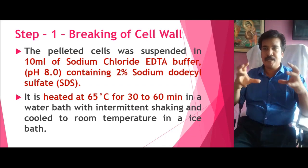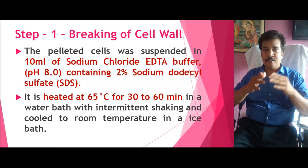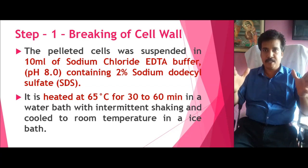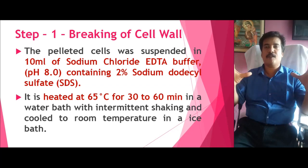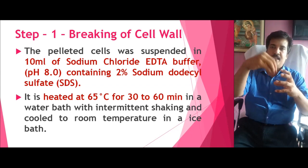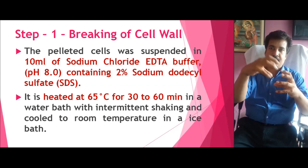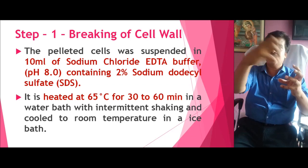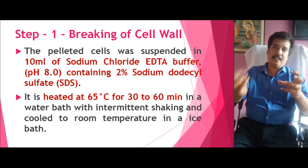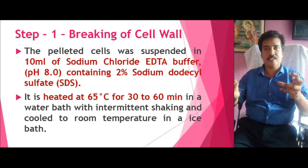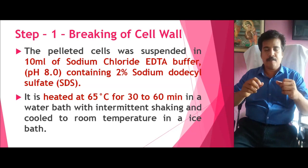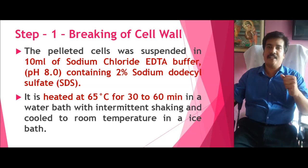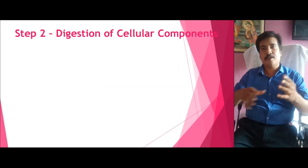The heating and immediate cooling causes strain over the cell wall, and the cell wall breaks down. Principally, we are treating the cell wall with a surfactant followed by a heating and rapid cooling process, which causes the breakdown of the cell wall. The cytoplasm along with DNA and other cell organelles comes out and is collected. This collected material can be used for further treatment for the isolation of DNA. In large scale, the cell wall can be disrupted by treatment with liquid nitrogen.